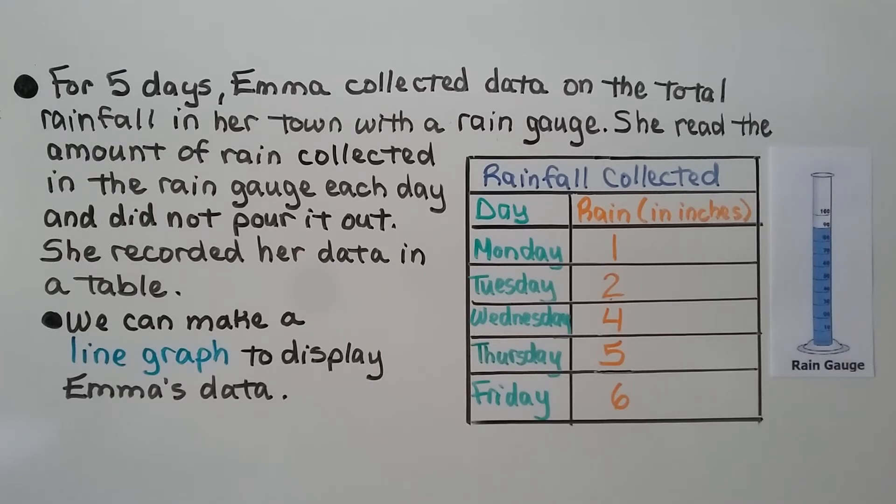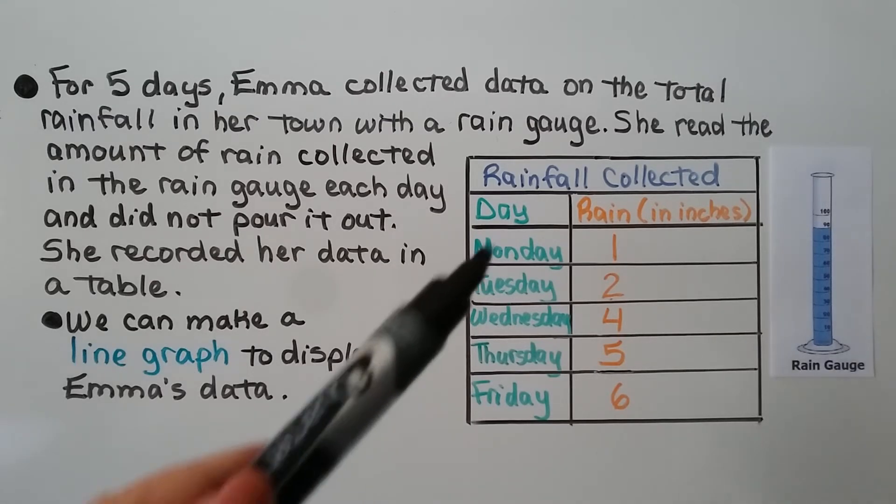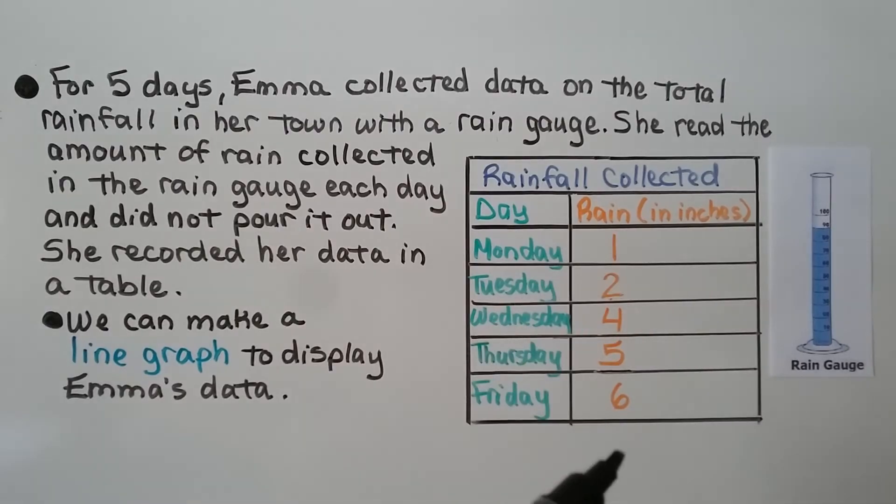For five days, Emma collected data on the total rainfall in her town with a rain gauge. Here's a rain gauge right here, and it's marked with measures, and water, the rain falls inside, and it slowly collects, and you can see the measures, and she read the amount of rain collected in the rain gauge each day and did not pour it out, and she recorded her data in a table. So here she's got the days, and here she's got the rain in inches.